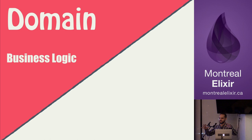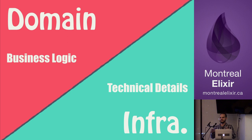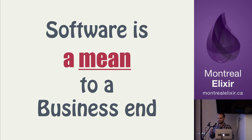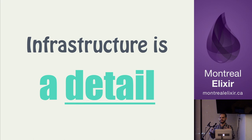The domain is about the business logic of what your application is doing. The database, the Redis cache, calling third-party servers through HTTP, FTP, SOAP, or anything else — these are all part of the infrastructure, meaning the technical details to make it work in real life. Don't be fooled though: software is a means to a business end. Even without software we could still do our business — it would just be less convenient.